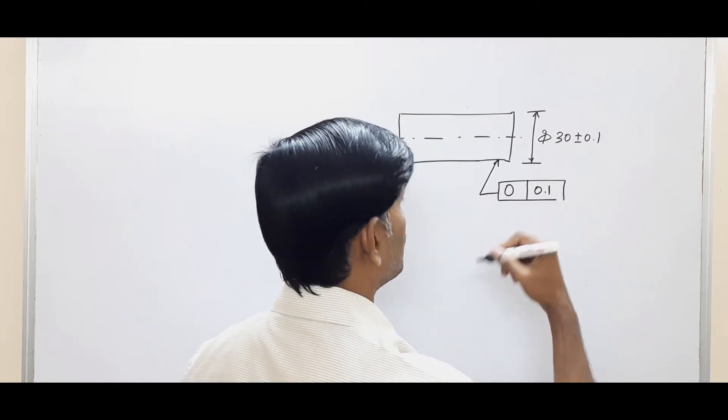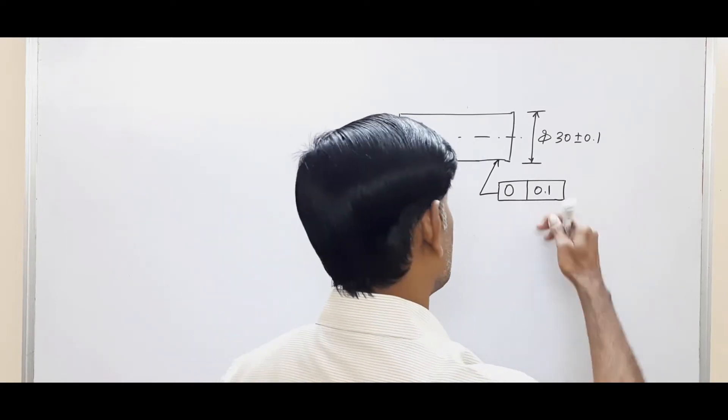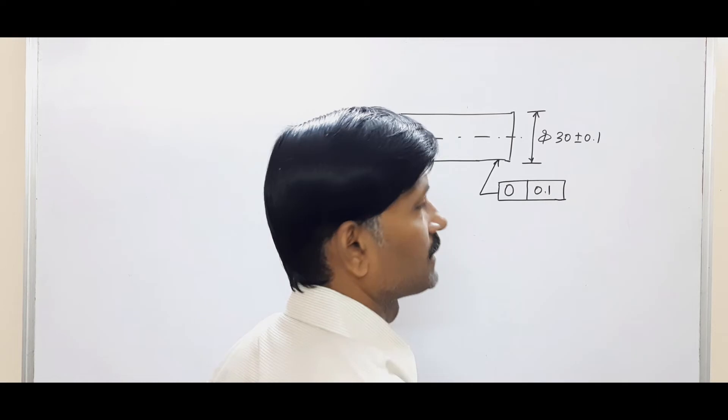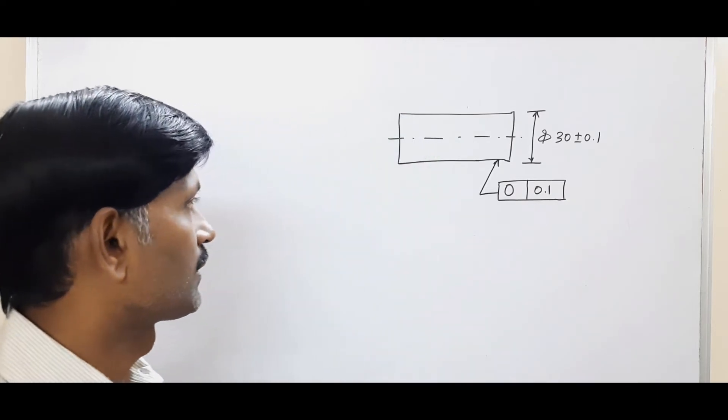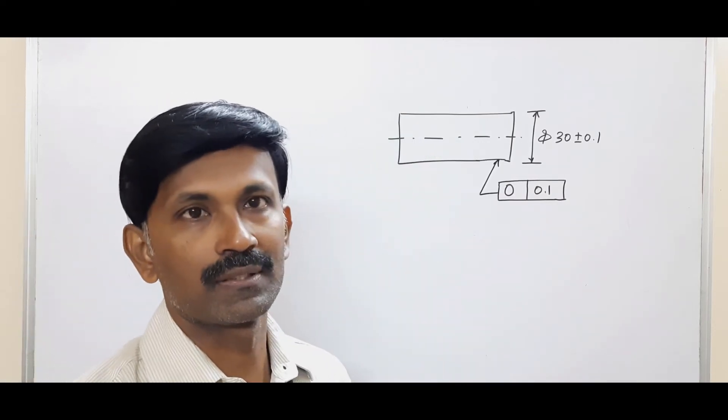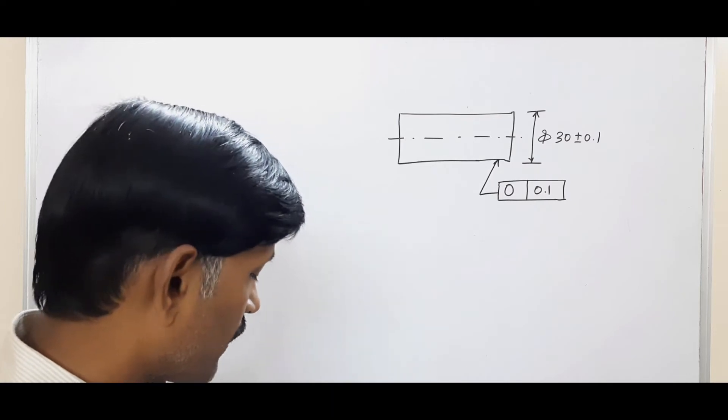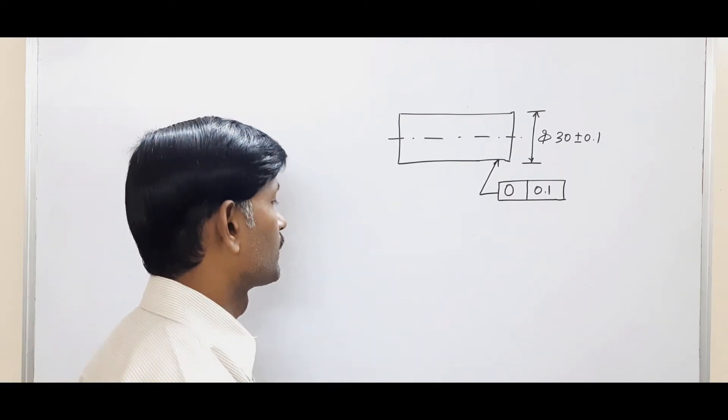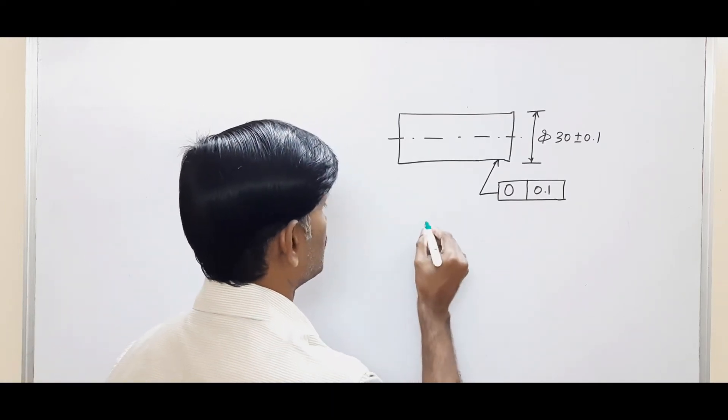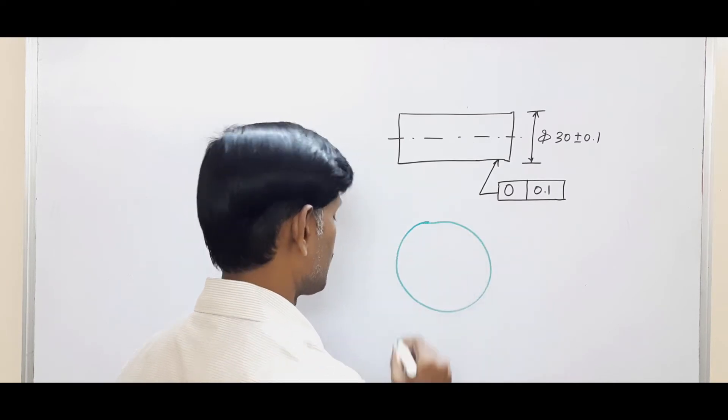The circularity symbol and geometrical tolerance value is specified. This geometrical tolerance value must be less than the dimensional tolerance value, as I had specified for straightness and flatness. This means there are two coaxial circles that is the tolerance zone for circularity.